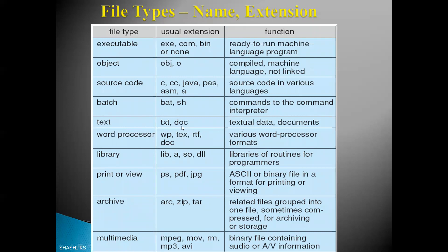Next is about the different types of file types. Every file is saved with a filename followed by a dot and an extension, and that extension usually specifies the type of the file. The first category is executable files — ready-to-run files which can be loaded into memory. They usually have extensions like .exe, .bin, or .com.